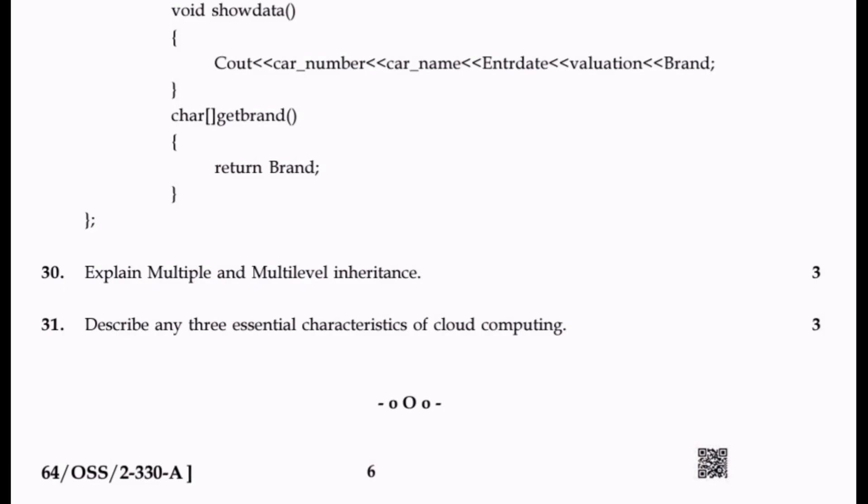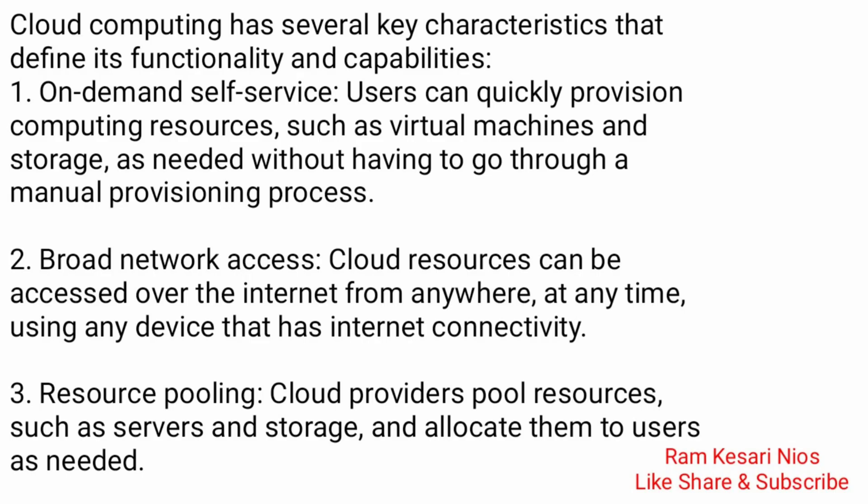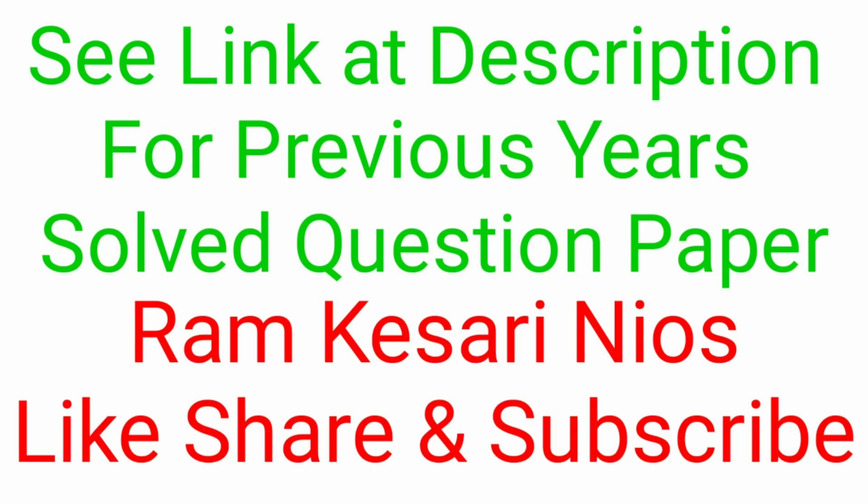Question 31: Describe any three essential characteristics of cloud computing. Cloud computing has several key characteristics. 1) On-demand self-service: users can quickly provision computing resources such as virtual machines and storage as needed without a manual provisioning process. 2) Broad network access: cloud resources can be accessed over the internet from anywhere at any time using any internet-connected device. 3) Resource pooling: cloud providers pool resources such as servers and storage and allocate them to users as needed. See the link in the description for previous year's solved question papers.